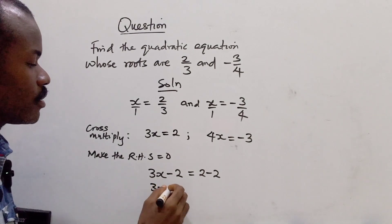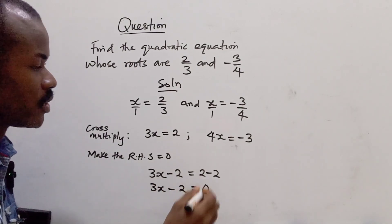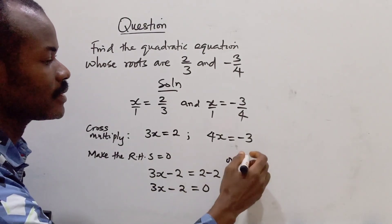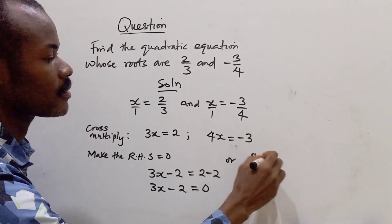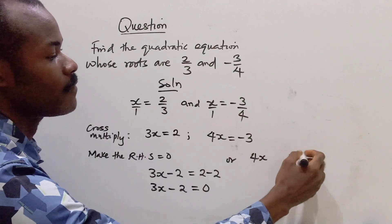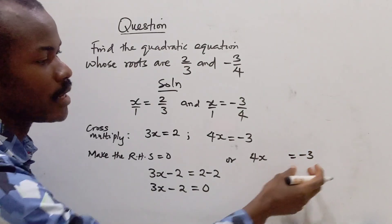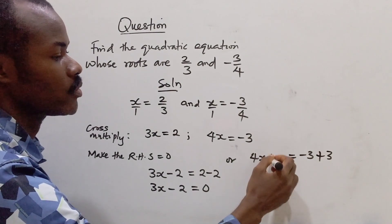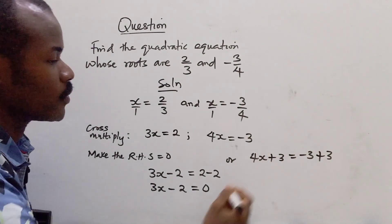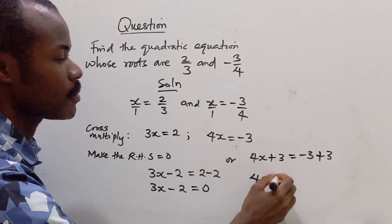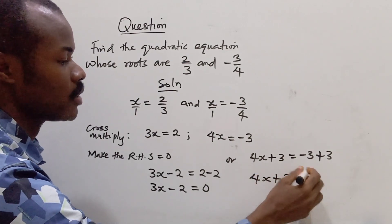Now for this part, I have 4x equals -3. How do I make this 0? I'm going to add 3 to both sides. So that will give us 4x + 3 = 0.